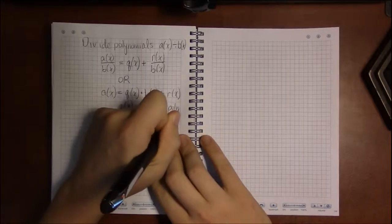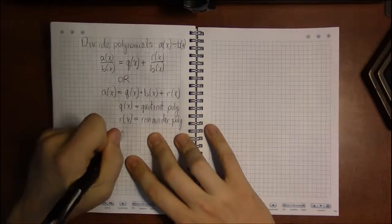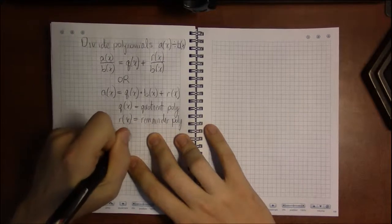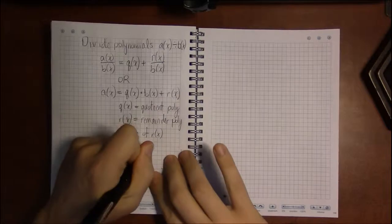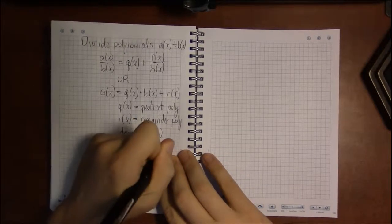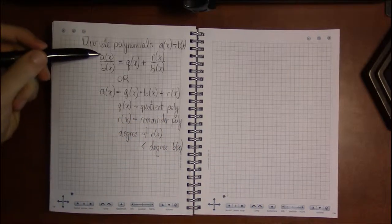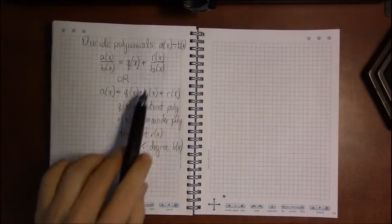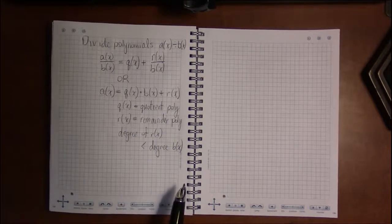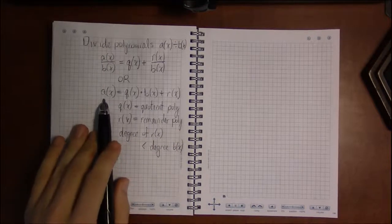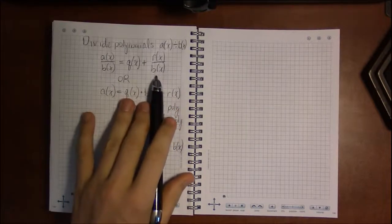Q becomes the quotient polynomial and R becomes the remainder polynomial. And what we can say about R is that its degree is smaller than B. The degree of R of X is strictly smaller than the degree of B of X. So dividing polynomials is very much like dividing numbers. But something very interesting happens when you pick a very special kind of denominator.